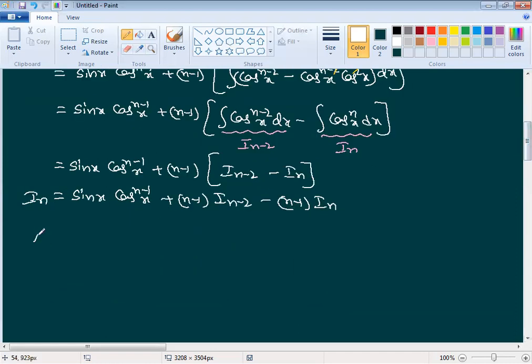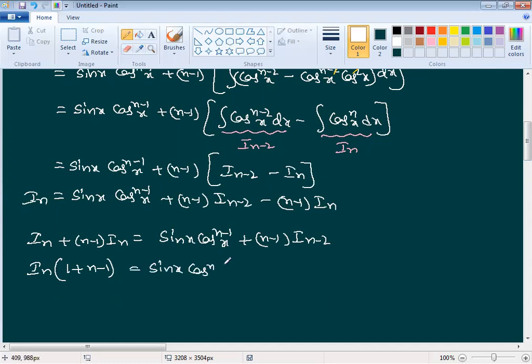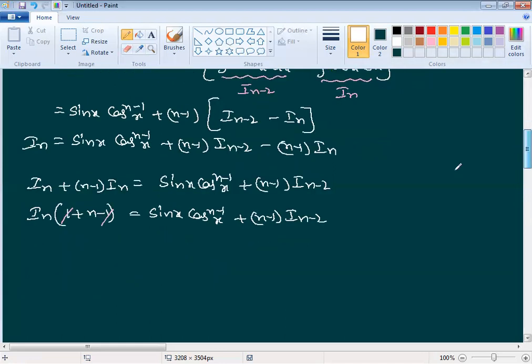Sin x cos power n minus 1 x plus n minus 1 into In minus 2 minus n minus 1 into In, which equals In. Move the In term to left side: In plus n minus 1 into In equals sin x cos power n minus 1 x plus n minus 1 into In minus 2. We can take In common from left side.